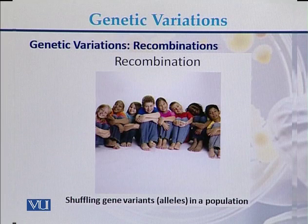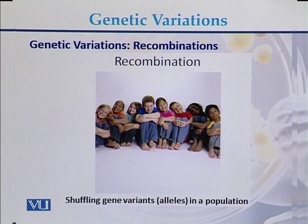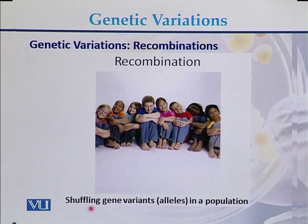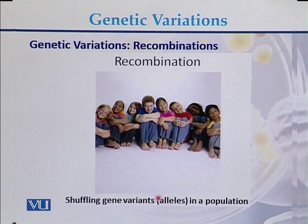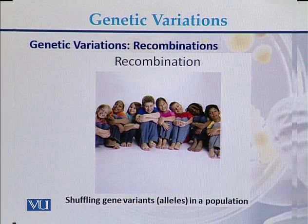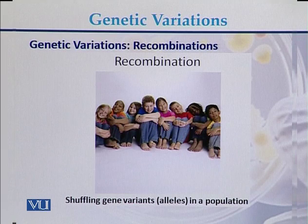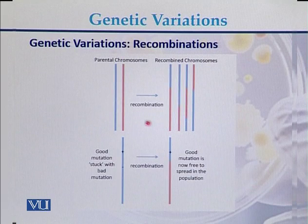Another reason how genetic variations occur is recombination. There are recombinations and shuffling of gene variants, also called alleles, within the population. Within populations, different alleles or different gene variants shuffle, which is also one of the reasons for genetic variants found in different genomes.